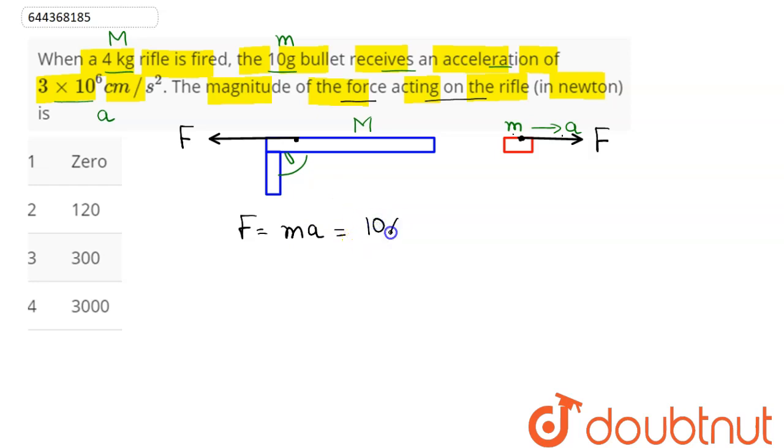Converting grams to kg: 10 × 10^-3. The acceleration of the bullet is 3 × 10^6 cm/s². Converting to m/s², we multiply by 10^-2. This calculation gives us 3 × 10^2 Newtons.